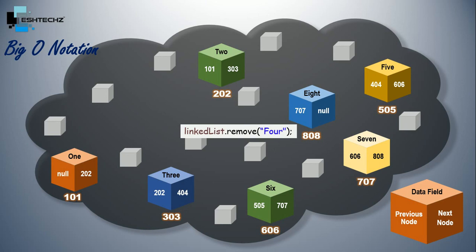And then it will update the values in the neighboring elements. And the neighboring elements are element 3 and element 5. So the next node of element 3 will become 505, whereas the previous node of element 5 will become 303. So we have successfully removed an element without impacting other elements of our list.